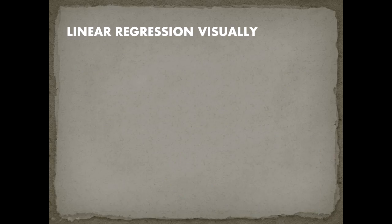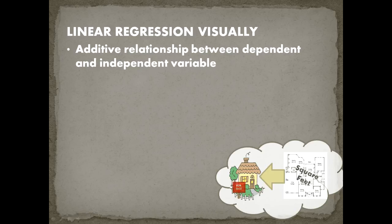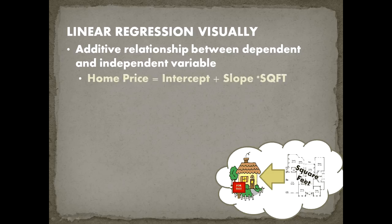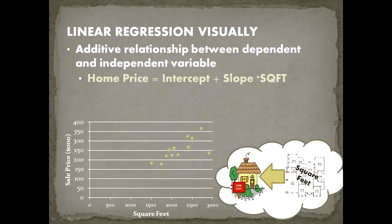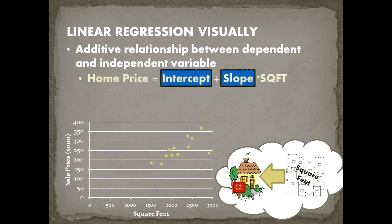Let's talk about linear regression visually. It's an additive relationship we're trying to fit. For our home, the home price equals some intercept — a baseline home price — plus the slope times the home square footage. We can collect home sales prices on the y-axis and plot square footage on the horizontal axis, and we can see a linear trend between sale price and square footage. We need to figure out the intercept and slope for that equation, taking the form y = β₀ + β₁x.